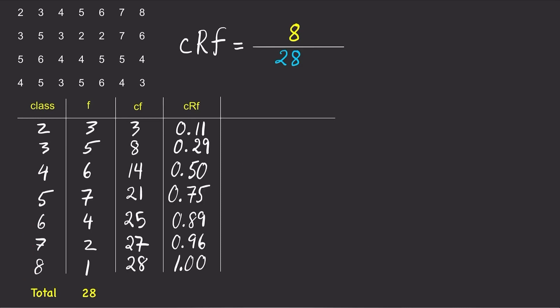A cumulative relative frequency of 0.50 for class 4 means that 50% of the data points are in class 4 and every class that came before it. In other words, 50% of the orders sold either 4, 3, or 2 burgers.